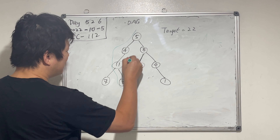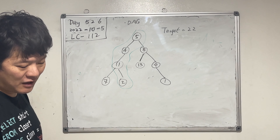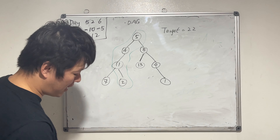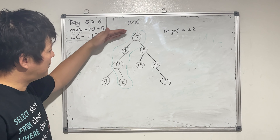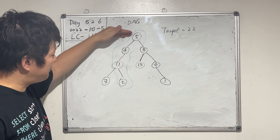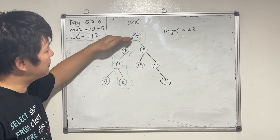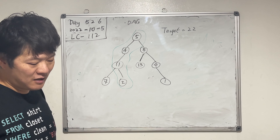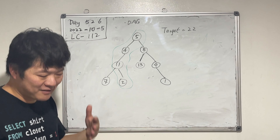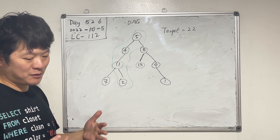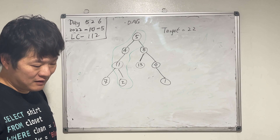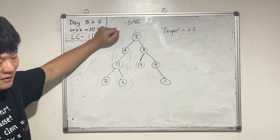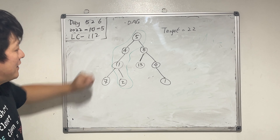How did you find this particular path where the sum of the nodes equals 22? You're trying each possibility, right? That's depth-first search and breadth-first search.